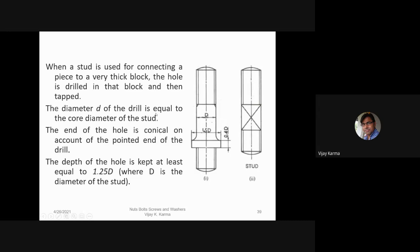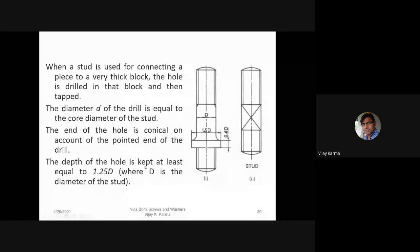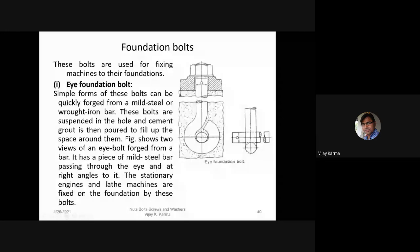The diameter d of the drill is equal to the diameter of the stud. The end of the hole is conical on account of the pointed end of the drill. The depth of the hole is kept at least equal to 1.25 times d, where d is the diameter of the stud.